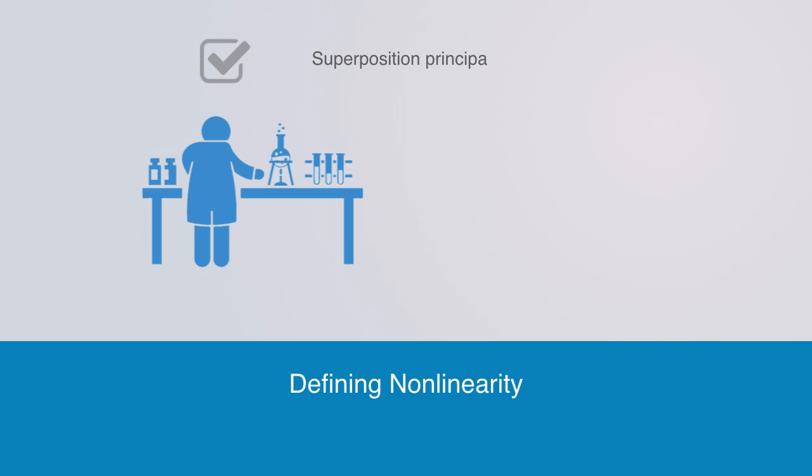In the previous section we discussed the key characteristics of linear systems, what is called the superposition principles. We can then define non-linear systems as those that defy the superposition principles.